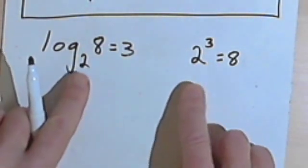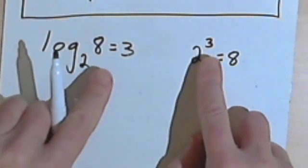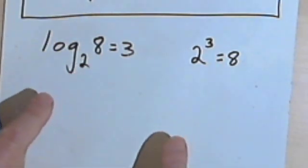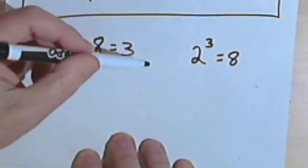I've got the same numbers on both sides of the page, a 2, a 3, and an 8. And the relationship is the same, it's just expressed in two different ways.